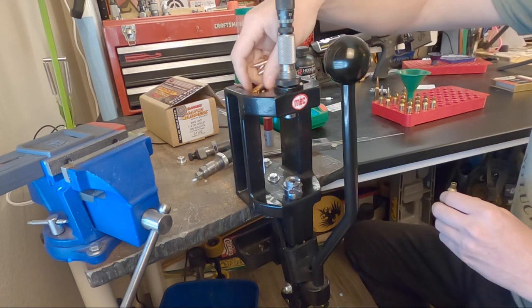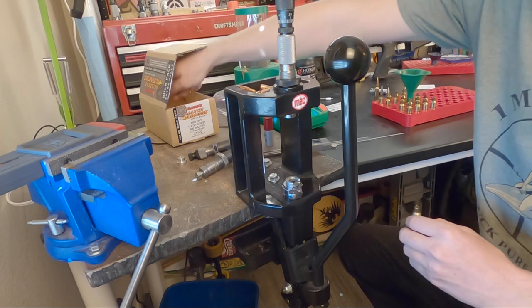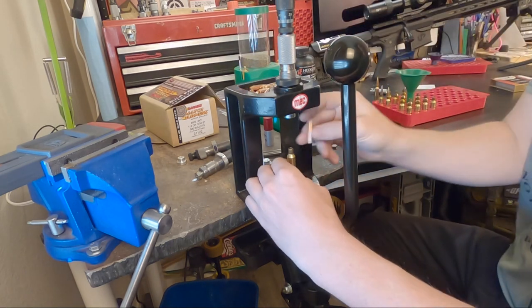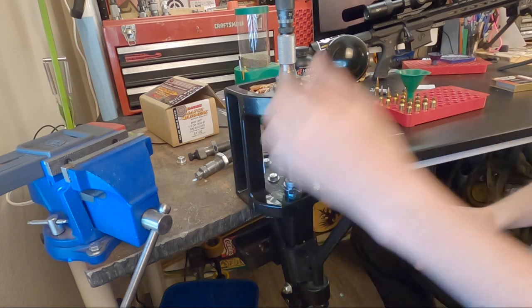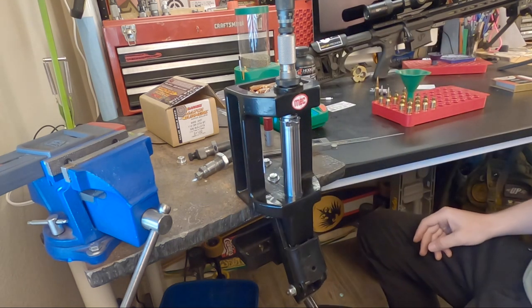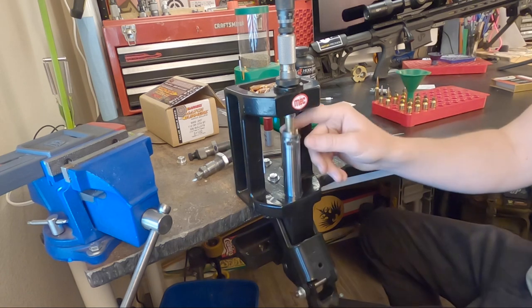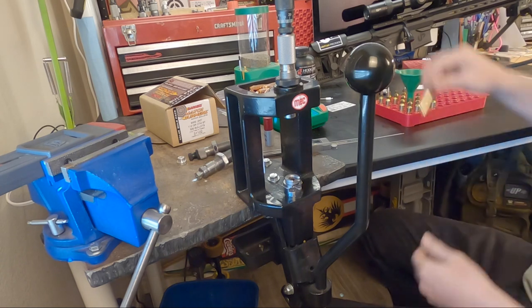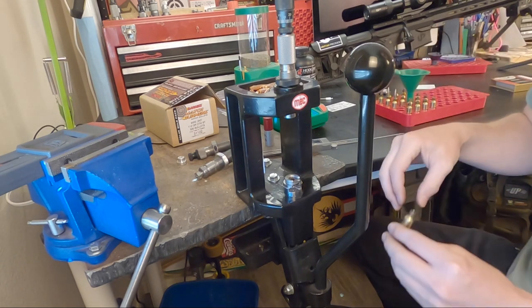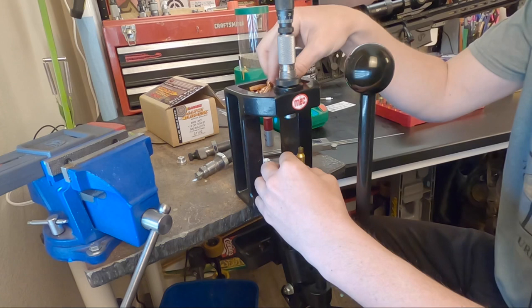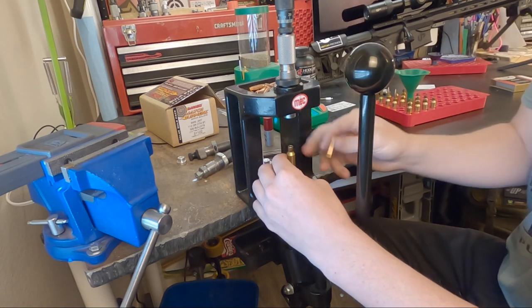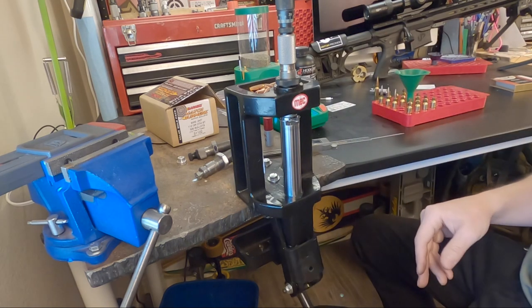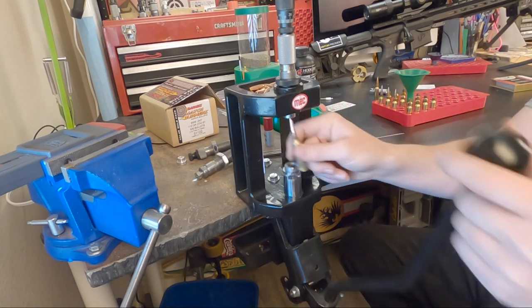So the mech press has a little area up top, a little storage bin. Super convenient. Just throw some projectiles in there. And then you can sit here and start seating away. Nice and easy. It's got that floating shell holder design, which helps it line up with your seating die here. So super straight consistent ammo from the mech marksman press. Final example. Go ahead and seated in there. Good firm press on the bottom. And there we go, guys.